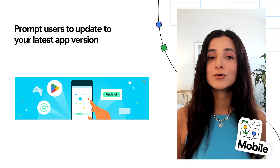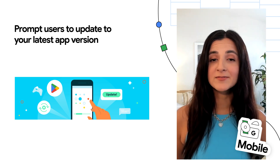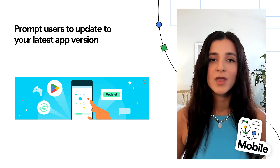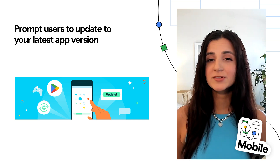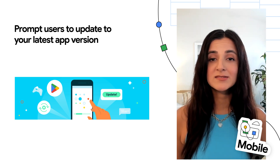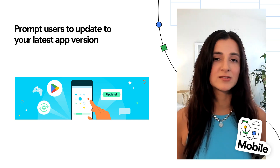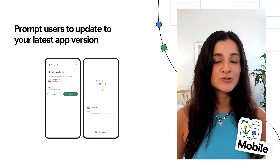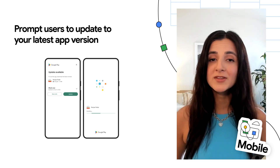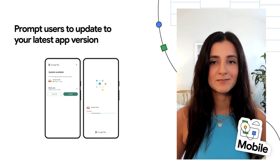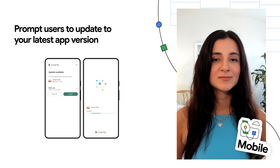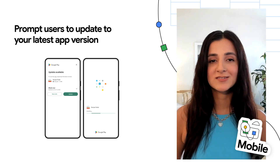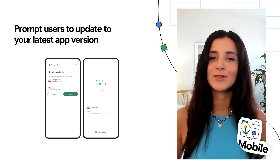For years, Google Play has helped users get the latest versions of your app through auto-updates or in-app updates. While most users update their apps this way, some may still be stuck on outdated, unsupported, or broken versions of your app. The team is excited to introduce a new tool that will prompt these users to update, bringing them closer to the app experience you intended to deliver. To learn more about the feature and start using it today, check out the link below.